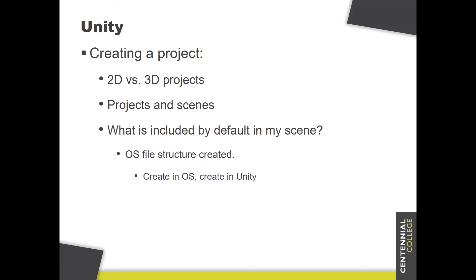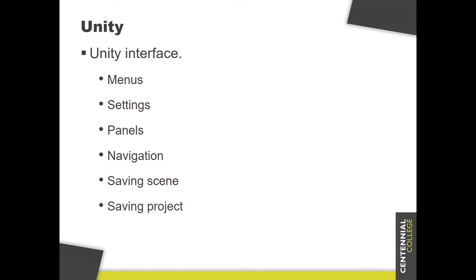So what exactly is Unity? Unity is the game engine that we're going to be utilizing in this particular course to do our game development. We'll talk about game engines as we move forward as well. Today is a practical look at Unity. We're going to go into the actual Unity interface and talk about all of the different screens and tabs available to you. We're going to start off by creating a 2D project or a 3D project and compare those two. We'll take a look at projects versus scenes, and then what is included in each of the default scenes. Afterwards, we're going to talk about the interface itself — Menus, Settings, Panels, Navigation, Saving a Scene, and Saving a Project. Let's head into Unity right now.